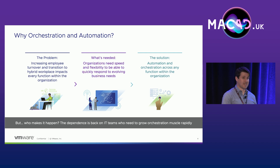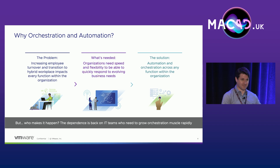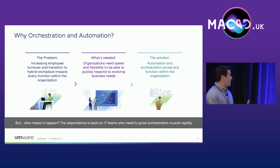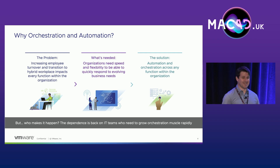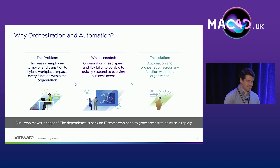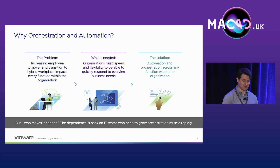This need to adapt isn't localized to any particular spot in these organizations. Line of business, HR, finance, legal, IT — all have these new necessities they have to adapt to. But as things tend to work, the onus always falls back on IT to help all of these different business units orchestrate their complex flows, use the right tools and processes, and make sure everybody has access to what they need.